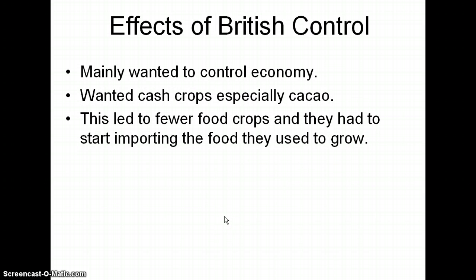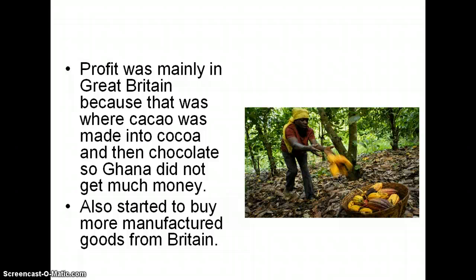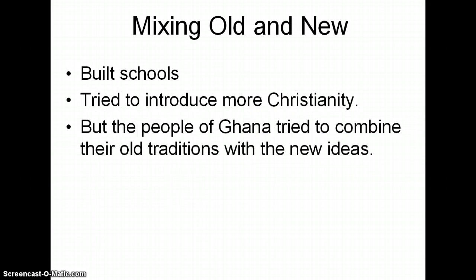The effects of British control — mainly they wanted to control the economy and wanted cash crops they couldn't grow in England, especially cacao, which is used to make chocolate. This led to fewer food crops, and they had to start importing food they used to grow. Profit was mainly in Great Britain, because that's where cacao was changed into cocoa and then into chocolate, so Ghana did not get much money. They also started buying more manufactured goods from Britain. The English did build some schools and tried to introduce more Christianity, but the people of Ghana tried to combine some of these new ideas with their old traditions.